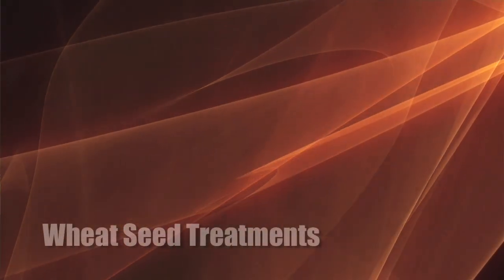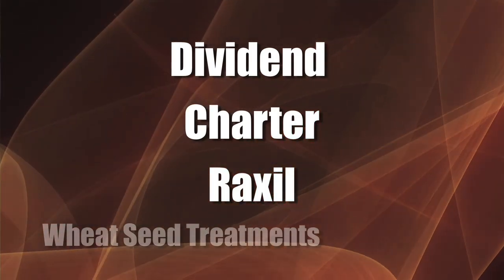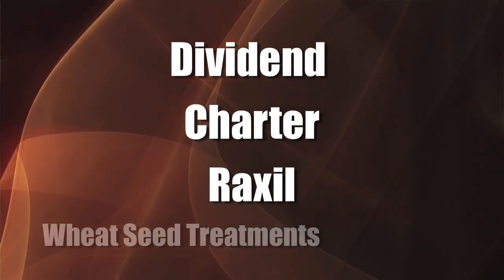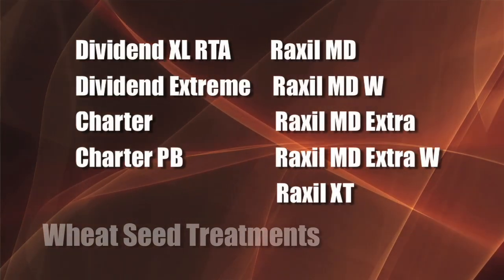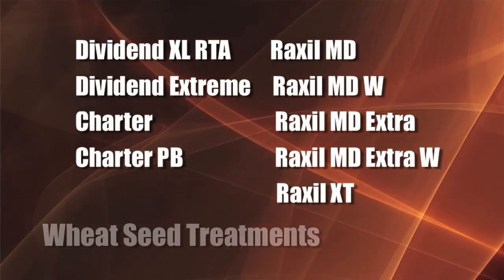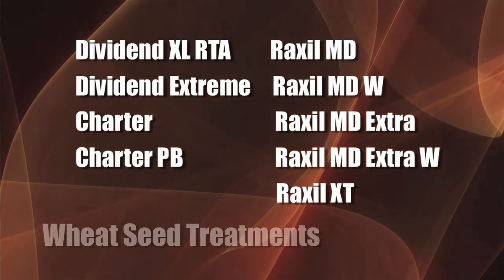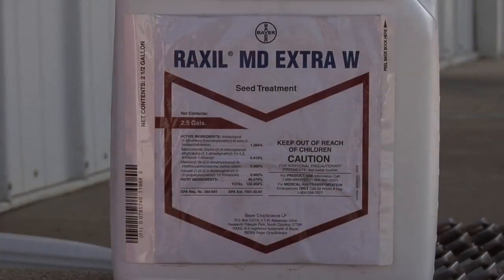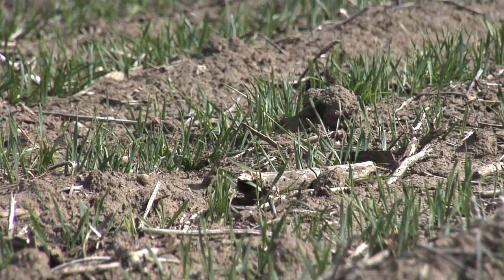There are three main ones we want to talk about today: Dividend and the family of Dividend products, Charter and the Charter products, and Raxel and the Raxel products. You might wonder why there are families — all of these disease-controlling seed treatments started out with one product that controls some diseases, and then chemical companies found they were missing other diseases, so they added another fungicide to the mix. Some are even now adding insecticides, trying to control as many common disease problems as possible.